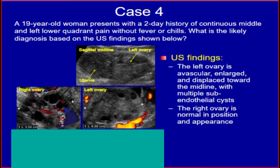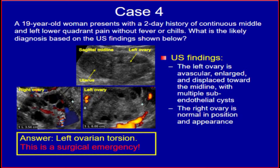Case 4. A 19-year-old woman presents with a 2-day history of continuous middle and left lower quadrant pain without fever or chills. Ultrasound findings: the left ovary is avascular, enlarged, and displaced toward the midline with multiple subcortical cysts. The right ovary is normal in position and appearance. The answer is left ovarian torsion. This is a surgical emergency.